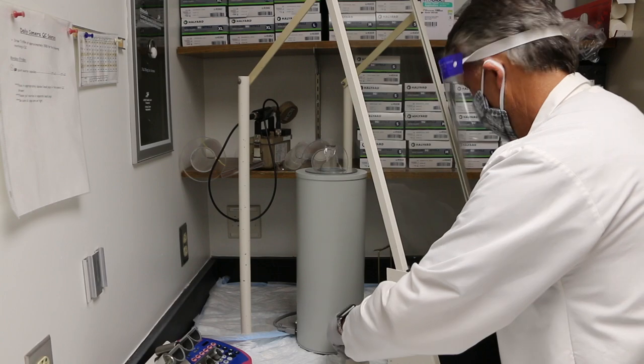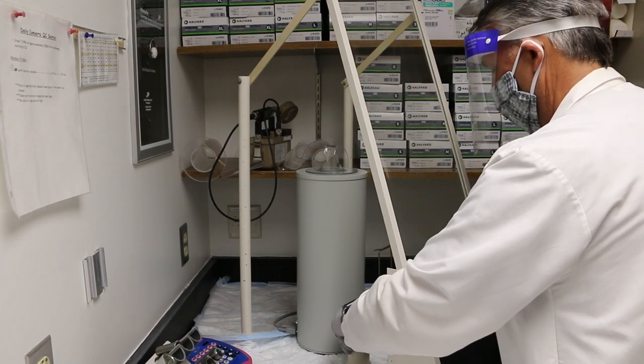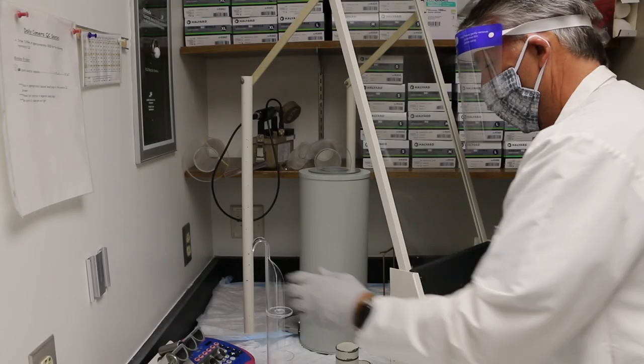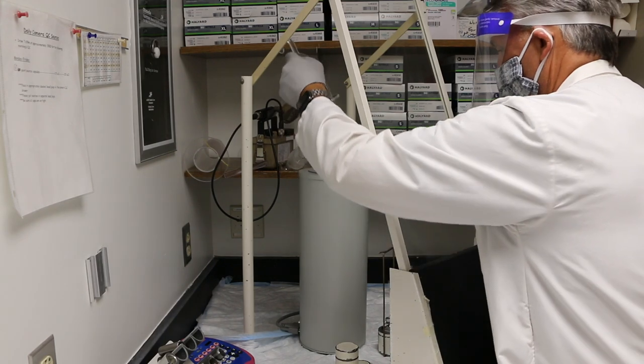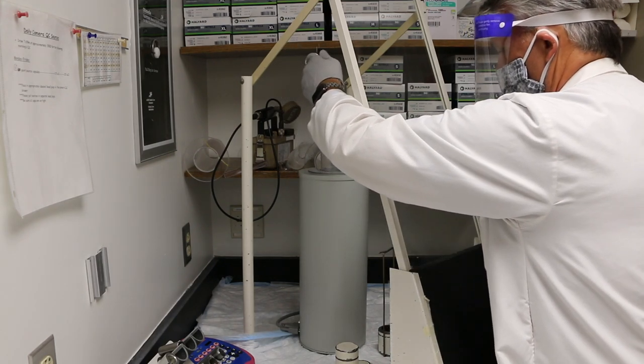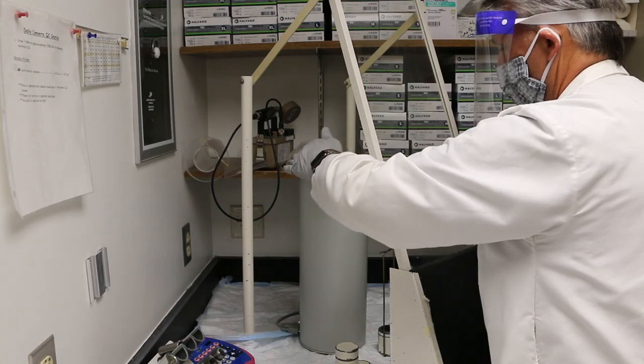Remove the lid, invert the container and lift the lead cover off so that the vial stands free. Using a pair of tongs, grasp the metal ring on the top of the vial and place it in the dipper. Then insert the dipper into the dose calibrator.